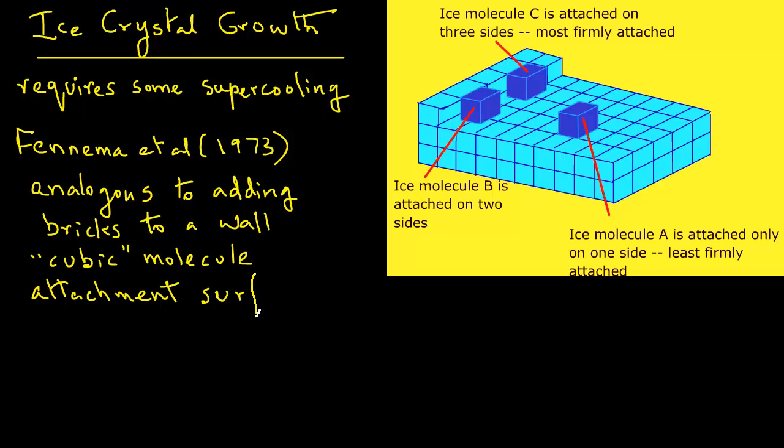This simplified visualization illustrates that the attachment surface of the crystal is important to its growth. On a corner that sticks outward, there will be more loosely bound molecules per unit volume of ice. These molecules would tend to leave the ice, promoting melting.